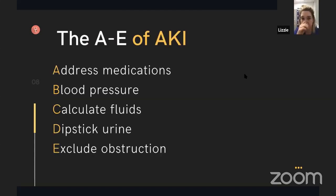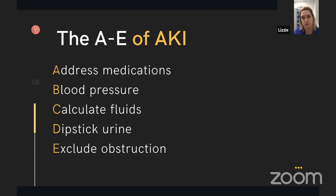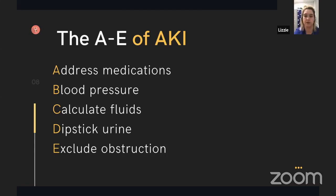The AKI management framework: address medications; optimise blood pressure with fluids or by stopping antihypertensives to maximise renal blood flow — but talk to someone before stopping antihypertensives if the systolic is over 200. Calculate fluid requirements — is this a resuscitation or maintenance scenario? Dip the urine and exclude obstruction.